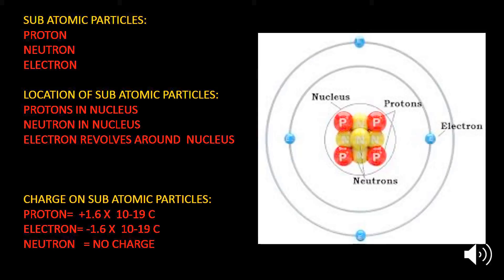Charge on the subatomic particles: Proton and the electrons have the same charge, equal to 1.6 × 10^-19 coulomb. But the proton has a positive charge whereas the electron has the negative charge. The neutron has no charge.